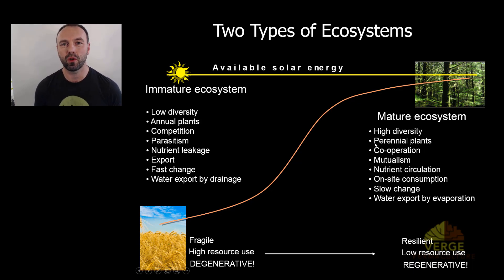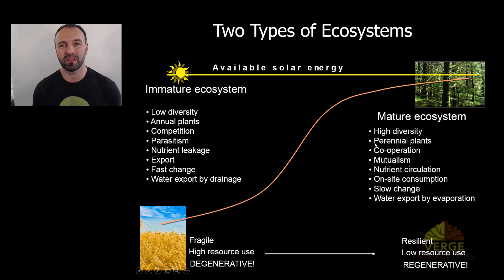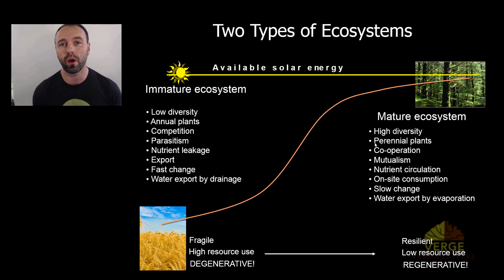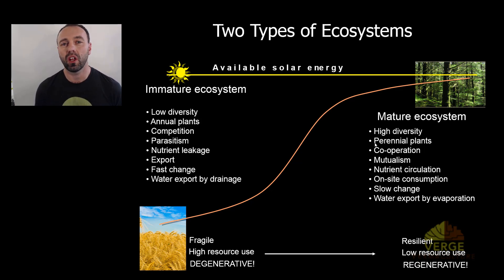In a monoculture, there's only one type of diversity — corn or wheat. Plants must be replanted every year because they're annual. They're based in competition, which is why herbicides are needed. There's parasitism because pests are trying to restore balance to an unbalanced single-species system. There's constant nutrient leakage requiring fertilizer input, since plants aren't adapted to water-soluble fertilizer pathways. The annual cycle drives fast change, and much of the water hitting these fields is exported and lost to sink — one of the main reasons for the dead zones around the world.